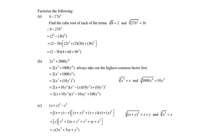Let's factorize 8 - 27b³. This is the difference of two cubes: 8 is 2 times 2 times 2, 27 is 3 times 3 times 3, and b³ is b times b times b. The first bracket is (2 - 3b), the cube roots. In the square bracket: first term squared is 4, the middle term with the opposite sign is +6b (which is 2 times 3b), and the last term is 9b². Therefore the answer is (2 - 3b)(4 + 6b + 9b²).